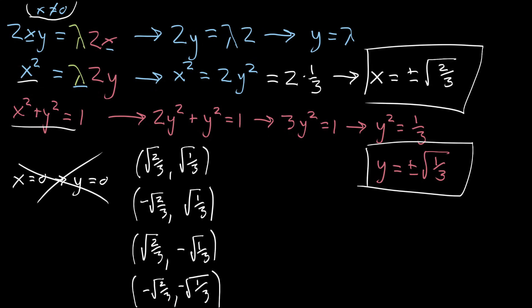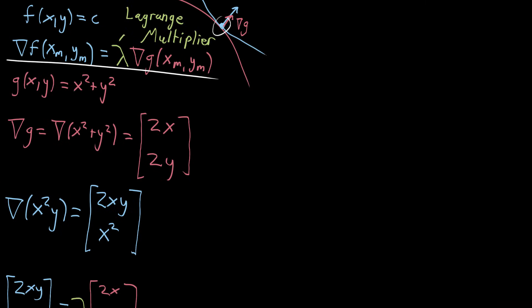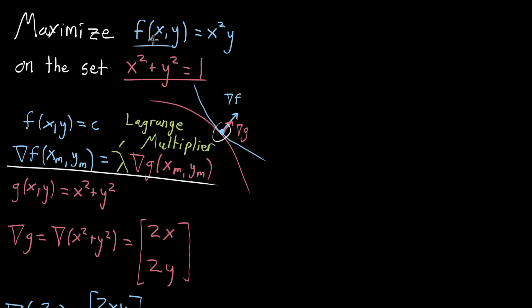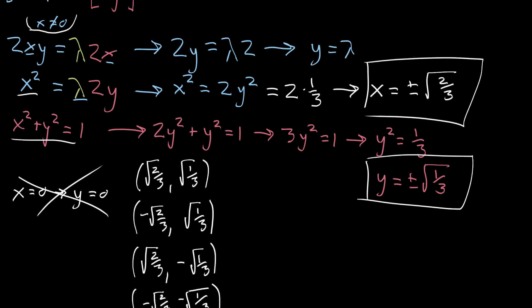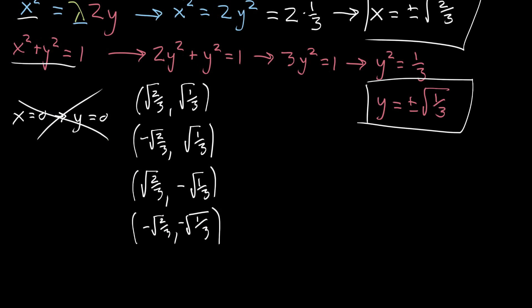And to find which one of these maximizes our function, let's go ahead and write down our function again. It gets easy to forget. So the whole thing we're doing is maximizing f of xy equals x squared times y. So we could just plug these values in, and see which one of them is actually greatest. And the first thing to observe is x squared is always going to be positive. So if I plug in a negative value for y, if I plug in either this guy here, or this guy here, where the value for y is negative, the entire function would be negative. So I'm just going to say that neither of these can be the maximum,